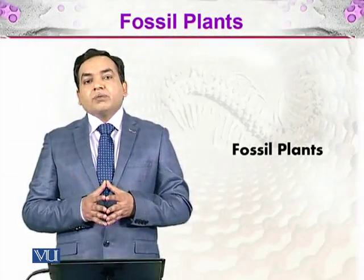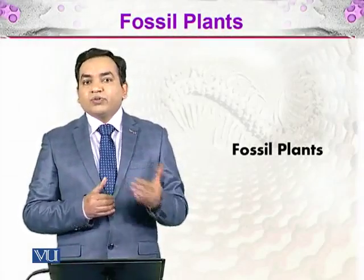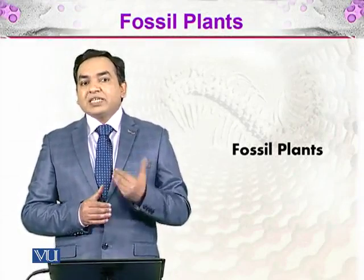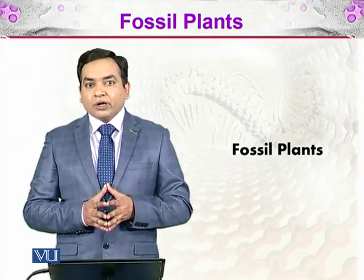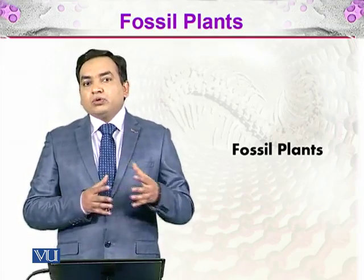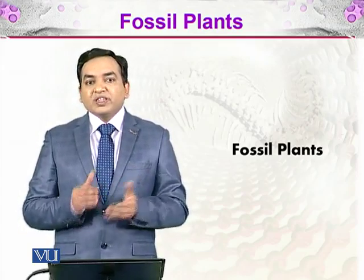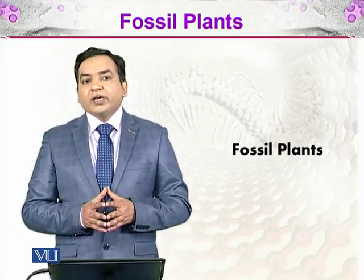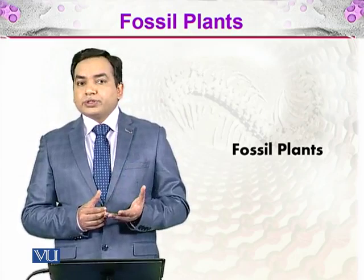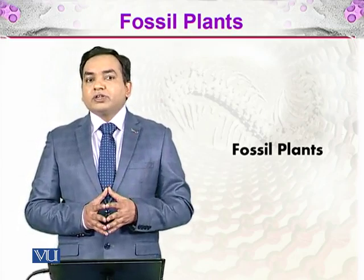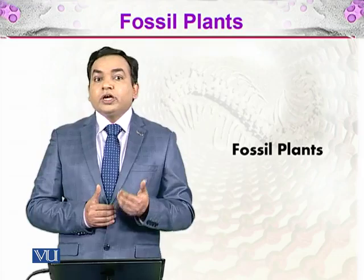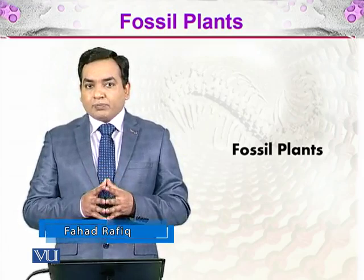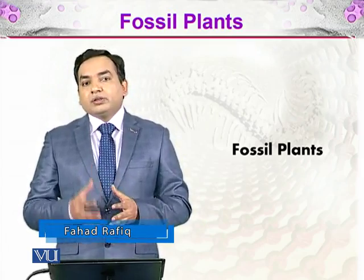We have discussed how different animals were evolving with the passing time in the course of Earth's history. When those animals were evolving, the plants were also evolving along with them. The plants are autotrophs — they make their own food and act as producers, taking up energy from the sun and giving that energy to other organisms in the environment. This means plants have a very primary role in an ecosystem.